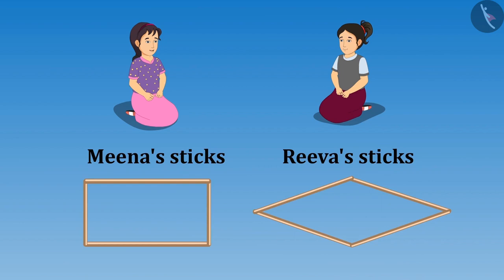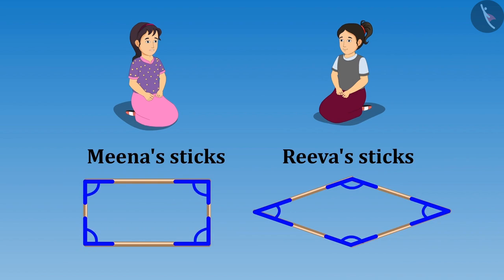Did you see Riva? There are four corners in our figures and these four angles are formed in four different corners. Still both have different shapes.